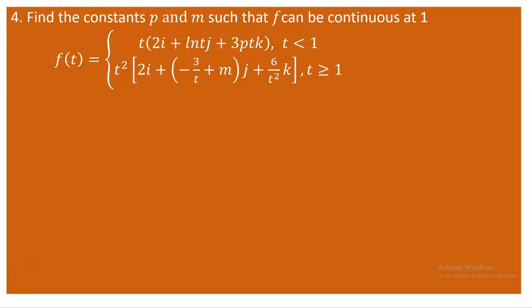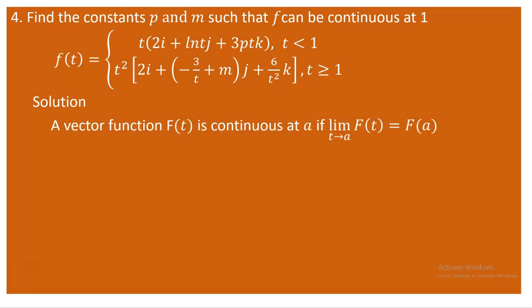In order to do this, you have to recall the definition of continuity for a function. A vector function f of t is continuous at a number a if the limit of f of t as t approaches a is the same as f of a. So if the limit exists, and a is part of the domain, and the limit equals f of a, then the function is said to be continuous at a. We need to assure this condition — take a to be one because we are asked to determine continuity at one.